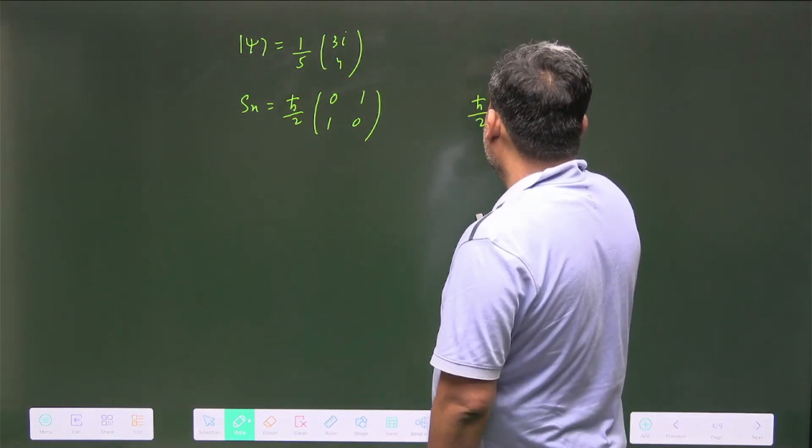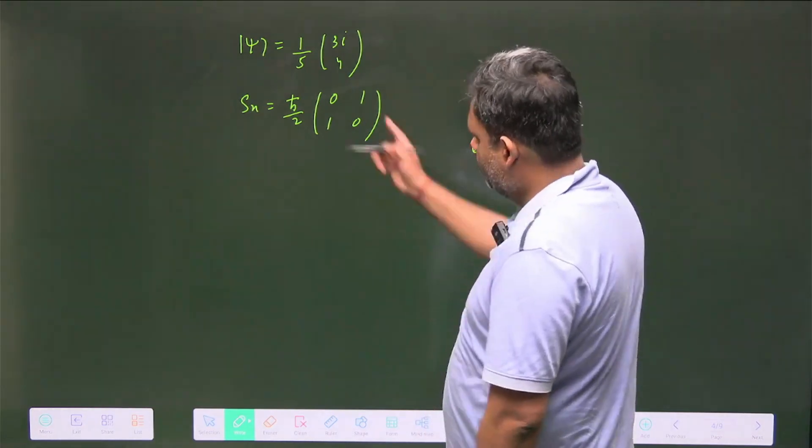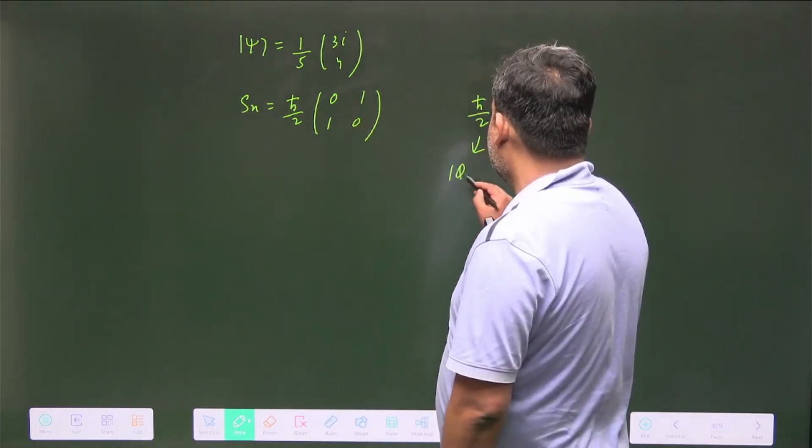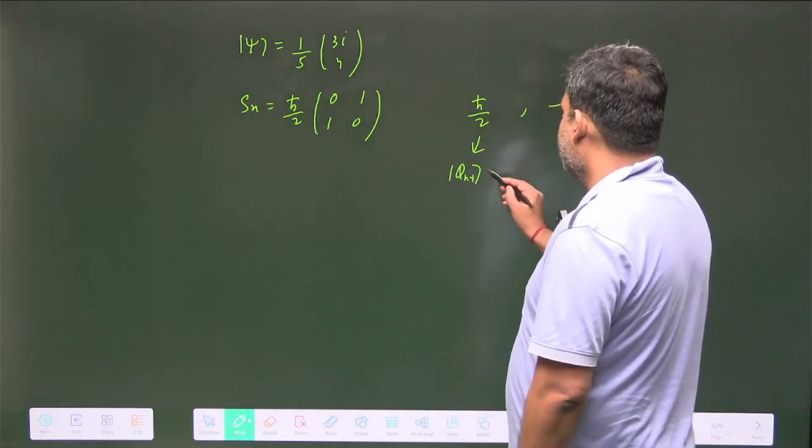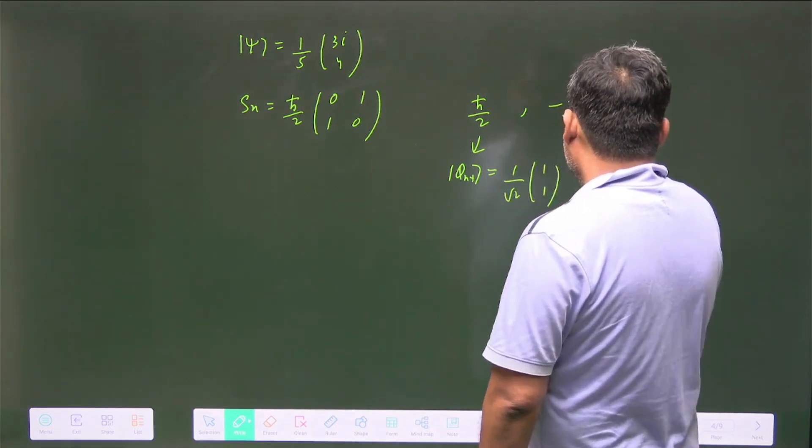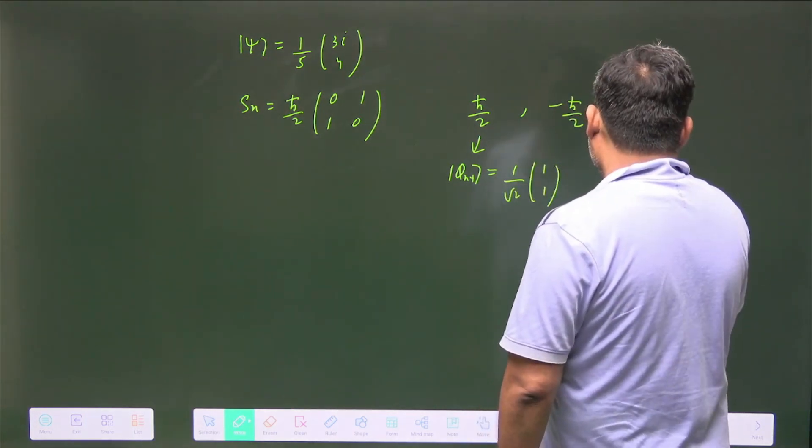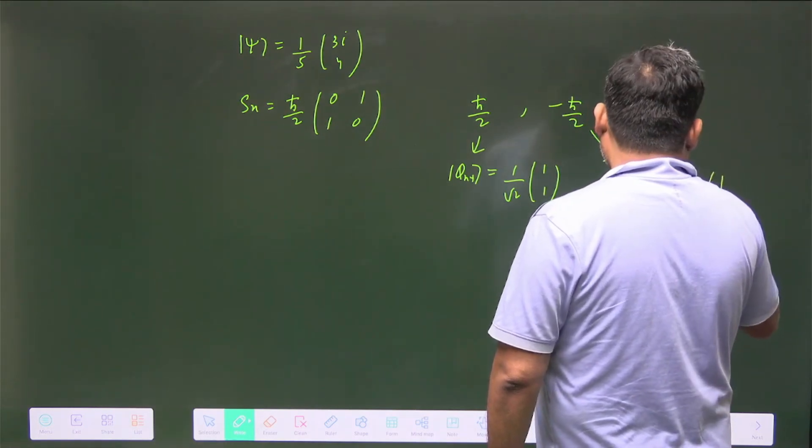The eigenvector corresponding to Sx, I can write as |φx+⟩, and this value is equal to (1/√2)(1, 1). For this one, this value is |φx-⟩ and equals (1/√2)(1, -1).